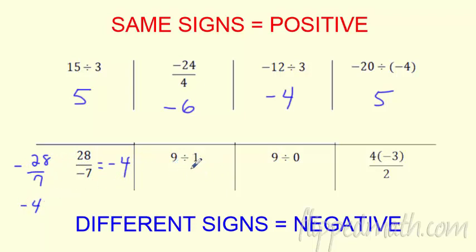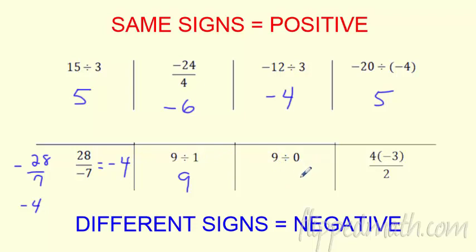What happens if you divide by 1? If I divide into one part, it stays the same — still 9. Signs are the same, so we're chilling with 9. What about 9 divided by 0? This is impossible. You can't take something and divide it into 0 parts. We call it undefined, or you can write impossible. We can't divide by 0.